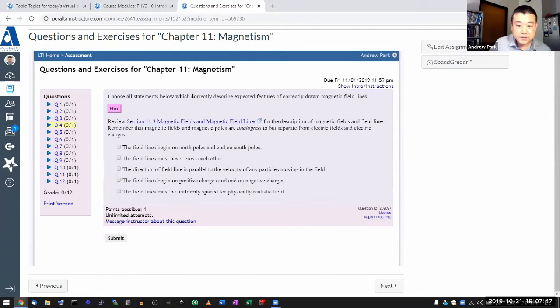The hint mentions that magnetic fields and magnetic poles are analogous to but separate from electric fields and electric charges. Let me just briefly highlight the features that you have seen with the electric charges and electric fields. If you have electric charges, positive and negative charges,